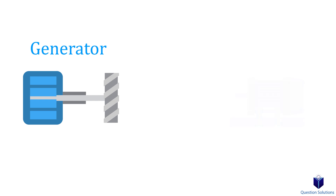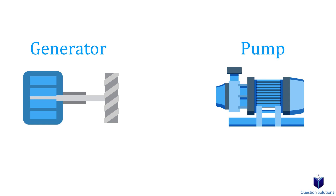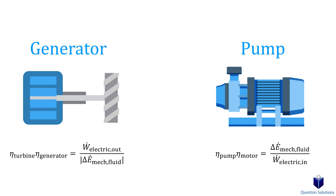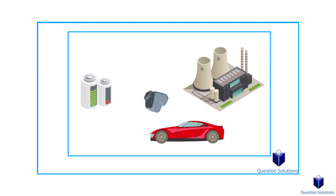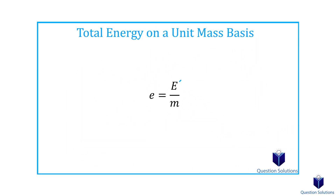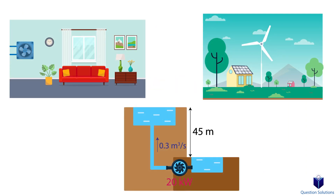Obviously, a generator is usually attached to a turbine, and a pump is typically attached to a motor. In these cases, we can think about combined efficiency — the overall efficiency of a motor-pump combination or a turbine-generator combination. These can be expressed with combined efficiency equations. To solve problems involving conversion efficiencies, you should be familiar with mass flow since turbines and pumps involve fluids flowing through blades.